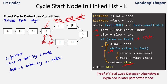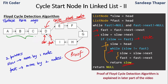The algorithm is simple, but we need to understand the proof. Why is this distance equal? We are saying that the distance A→B→C→D equals the distance G→H→I→D, because slow and fast initially met at G.